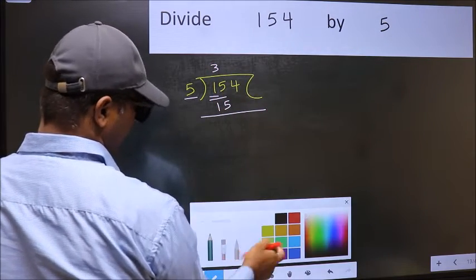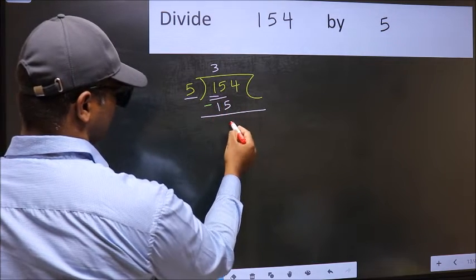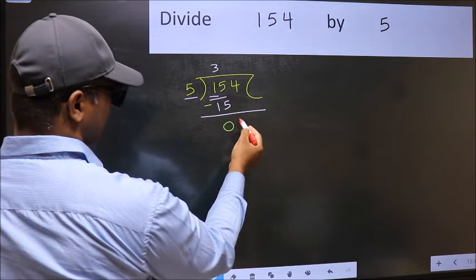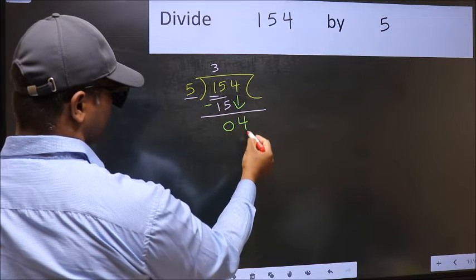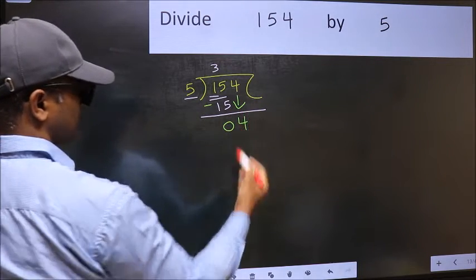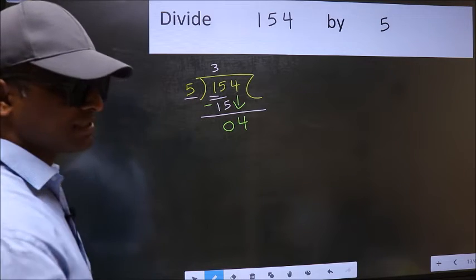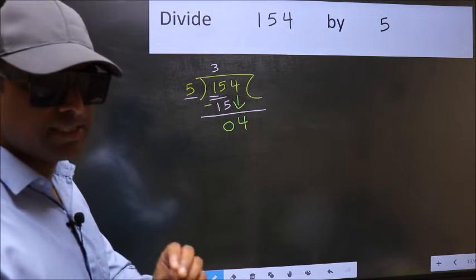Now you should subtract. 15 minus 15 is 0. After this, bring down the beside number, so 4 down. After this step, the mistake happens.